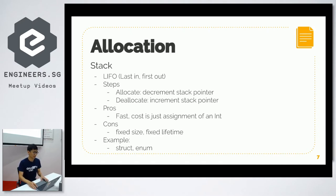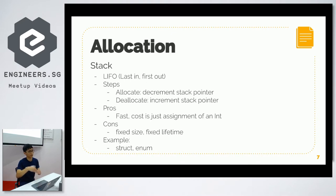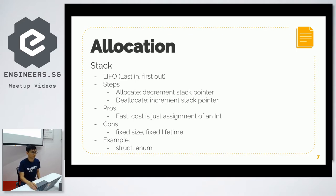The good thing about stack allocation is it is very fast, because it is literally the cost of assigning an integer. But the drawback is the size and lifetime is somewhat fixed — the stack memory is allocated on top of each other, so it's quite hard to change the size after allocation. Usually stack memory is deallocated when you go out of function scope, so you can't control much of its lifetime. Examples of stack allocation are struct and enum.